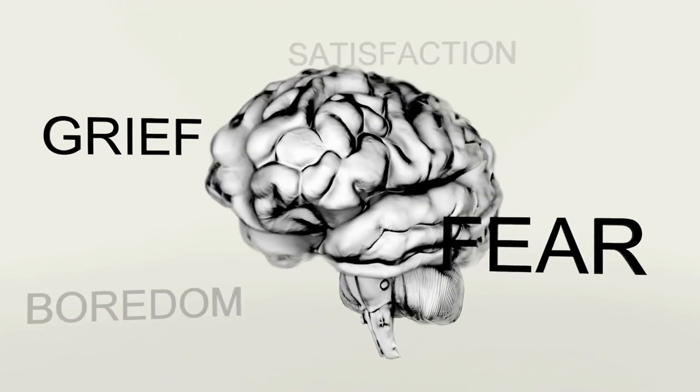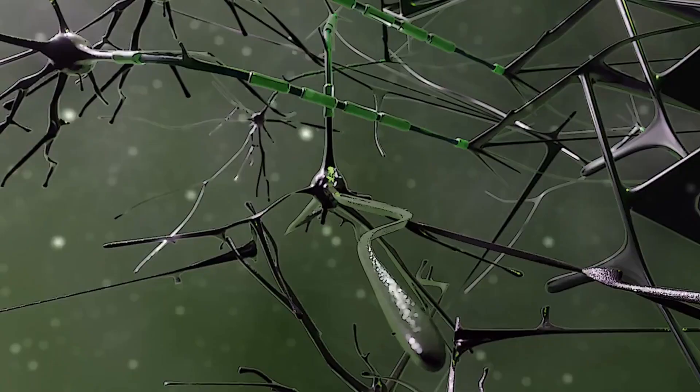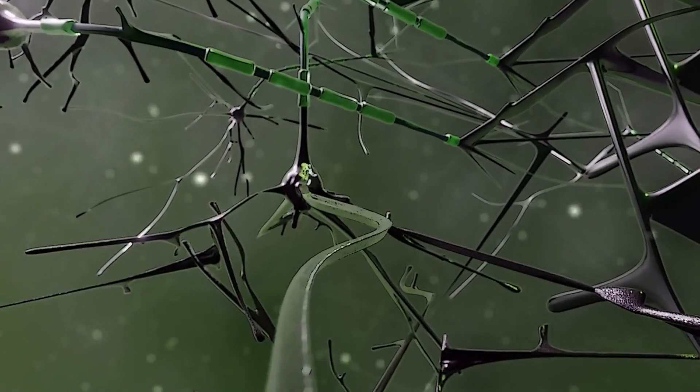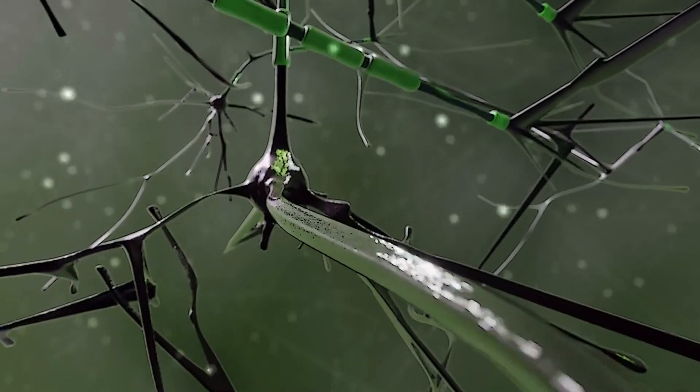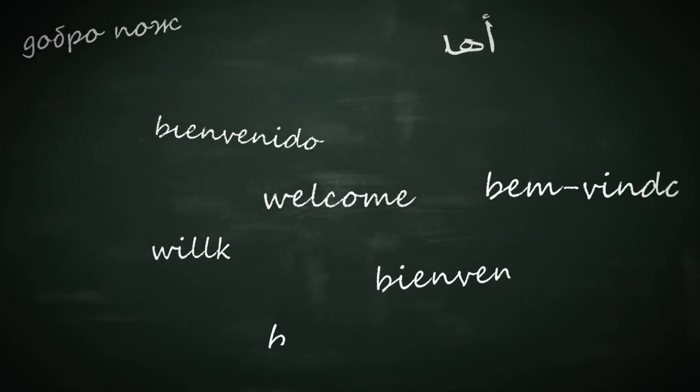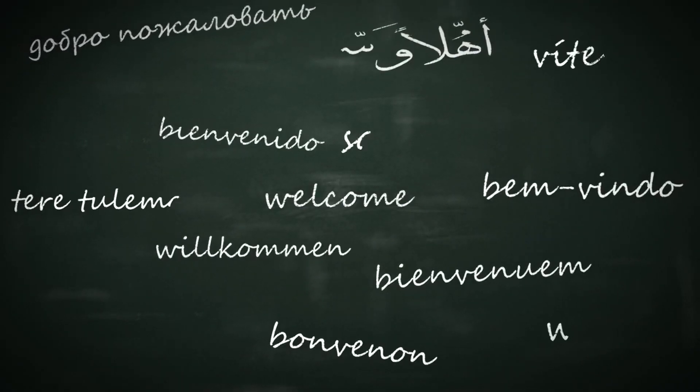The brain, our most complex organ, is not a static entity. It possesses a remarkable property known as plasticity, which allows it to change and adapt. When you learn a new language, your brain undergoes significant changes, with new neural connections being formed and existing ones being strengthened.